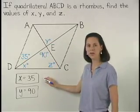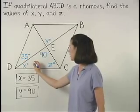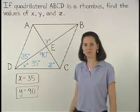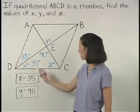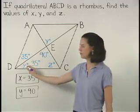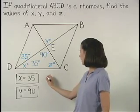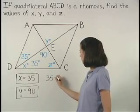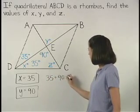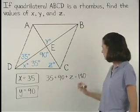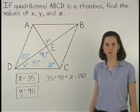And since we already know that X equals 35 and the sum of the measures of the angles of a triangle is 180 degrees, we can set up the equation 35 plus 90 plus Z equals 180.